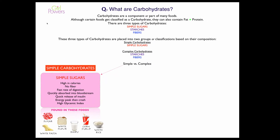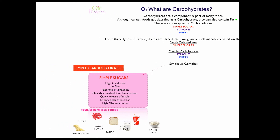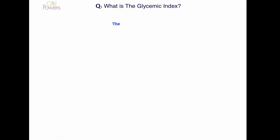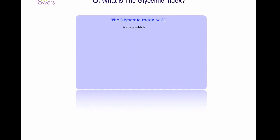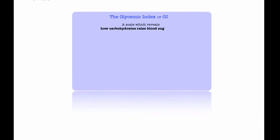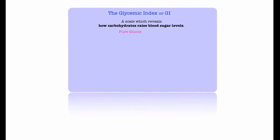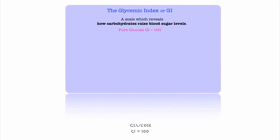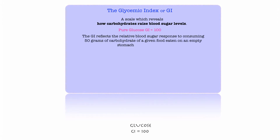We're going to take a look at the glycemic index and then come back to this chart, because it's important to understand the glycemic index and how carbohydrates affect your body. The glycemic index, or GI, is a scale which reveals how carbohydrates raise blood sugar levels. It's based on a standard of pure glucose having a GI of 100. The GI reflects the relative blood sugar response to consuming 50 grams of carbohydrate of a given food eaten on an empty stomach, measuring the increase in blood sugar after 90 to 120 minutes.